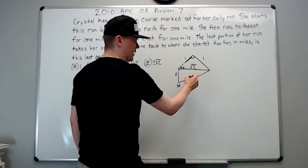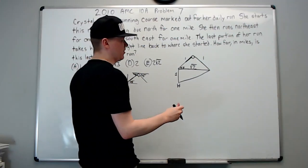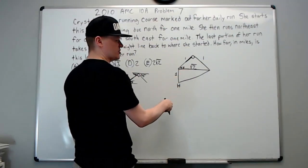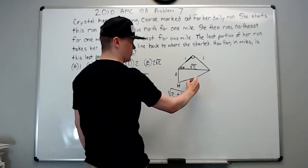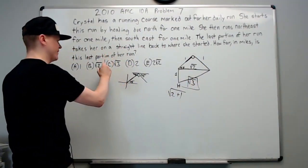This is obviously 1, 1, and √2. If you don't know that, do Pythagorean, but shame on you if you don't know that. √2 squared is 2, 1 squared is 1, square root of that is √3. That is the answer.